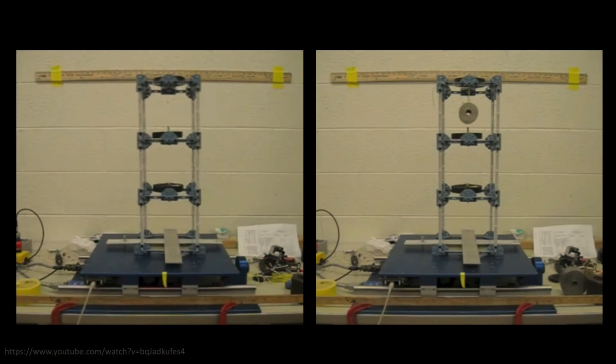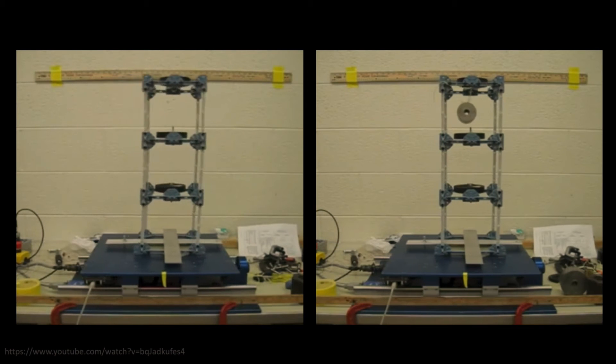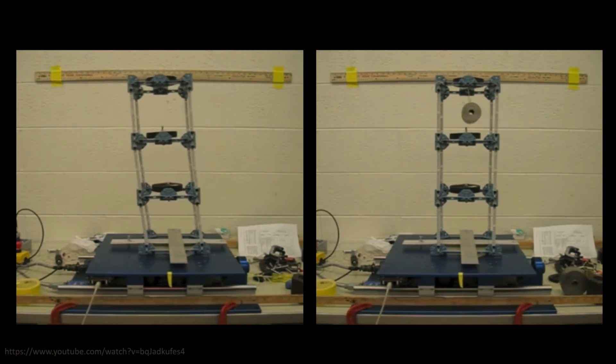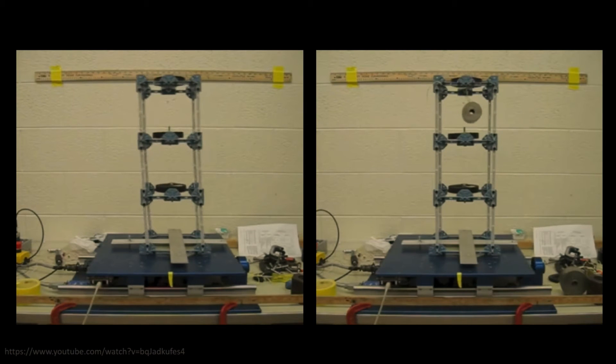Here, we have a model of a building. The one on the left has no vibration absorber, and the one on the right has a vibration absorber shown in the orange circle. Now, we will start shaking these buildings with the same amount of movement at the bottom. This is simulating an earthquake hitting the building. You will notice that the building on the right, the one with the vibration absorber, is shaking much less than the one on the left.